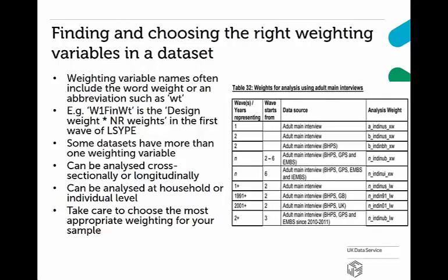Weighting variable names often include the word 'weight' or an abbreviation such as WT, so they're easier to spot in a large dataset. For example, W1FinWT is the design and non-response weight that's included in the first wave of the Longitudinal Study of Young People in England. The best place to find information about the weighting variable in a dataset is in the documentation that accompanies the survey. Most often, this information is included in the survey's user guide or technical report.